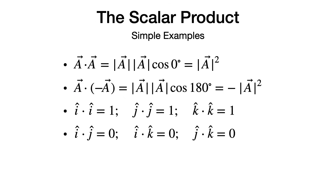Here are a few simple examples to keep in mind. If we take the dot product of any vector with itself, we simply get the magnitude squared of that vector. If we take the dot product of a vector with minus itself, we get minus the magnitude squared. If we consider the dot product between unit vectors i-hat, j-hat, and k-hat — unit vectors have unit length, so their magnitude is 1 — the dot product of any unit vector with itself is simply 1, whereas the dot product of any unit vector with a different unit vector is 0, because the unit vectors are all perpendicular to each other.